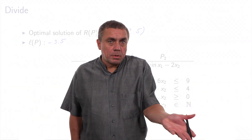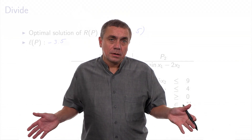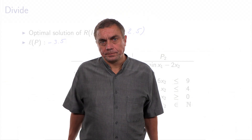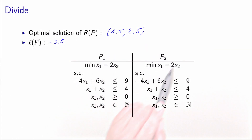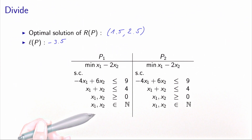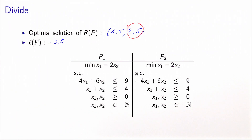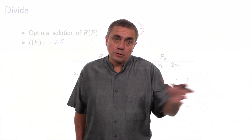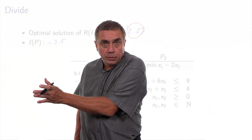We cannot do much with this lower bound yet, so what we will do is divide the feasible set into two subsets. I will build two problems P1 and P2. I look at one of the values of x which is rational, not integer. In this case, I will take x2. When we solve the relaxation, we find x2 equals 2.5, which cannot be a solution for the integer problem. In the original problem, x2 is either less or equal to 2, or greater or equal to 3 — it cannot be in between.